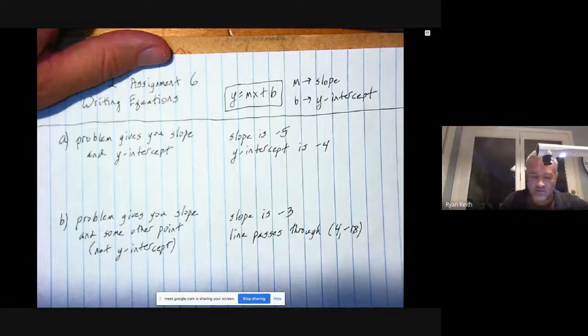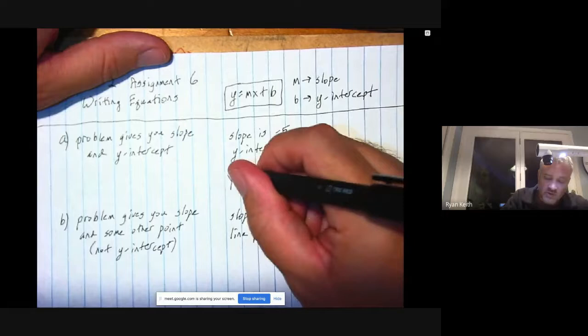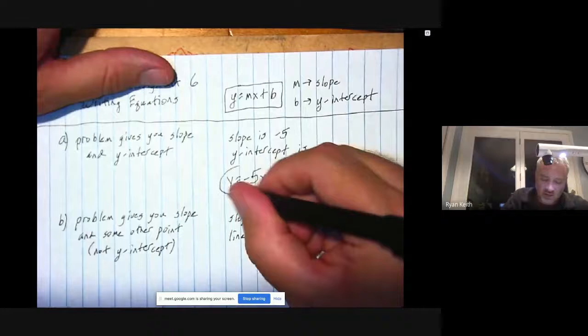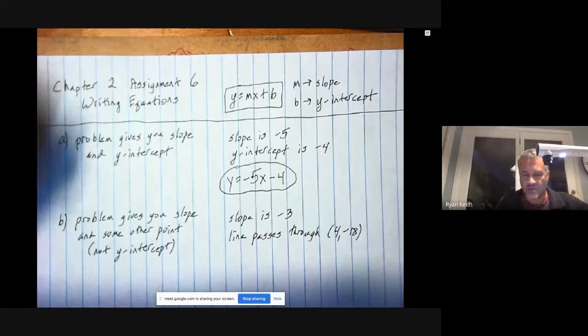If the slope is negative 5, that's our m, so we'll say y equals negative 5 in the m spot in front of the x. And the y-intercept is negative 4 simply goes in the back as your b, and that one's done. Again, not particularly challenging, so let's move on to the next one right away.